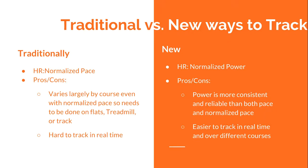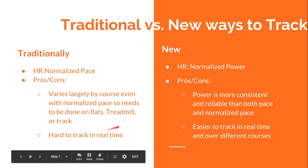Traditionally, aerobic decoupling has been tracked using heart rate to normalized pace, especially in running. TrainingPeaks will factor in your elevation gains and descents to create a normalized pace. The problem is that it's hard to compare runs across different courses, and it's also hard to track in real time because you don't know your normalized pace mid-run. To test it traditionally, you'd need a treadmill, a track, or a very flat course.